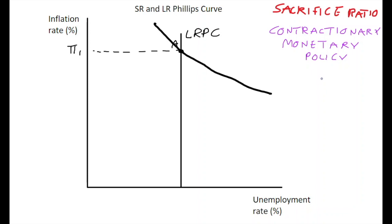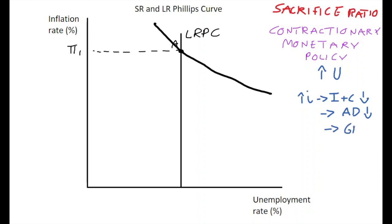Because contractionary monetary policy — with the interest rate going up — tends to reduce things like economic investment and consumption. When these are reduced, this will tend to reduce aggregate demand. When aggregate demand reduces, this tends to reduce GDP, and if output is falling, firms tend to get rid of workers, so the unemployment rate increases.